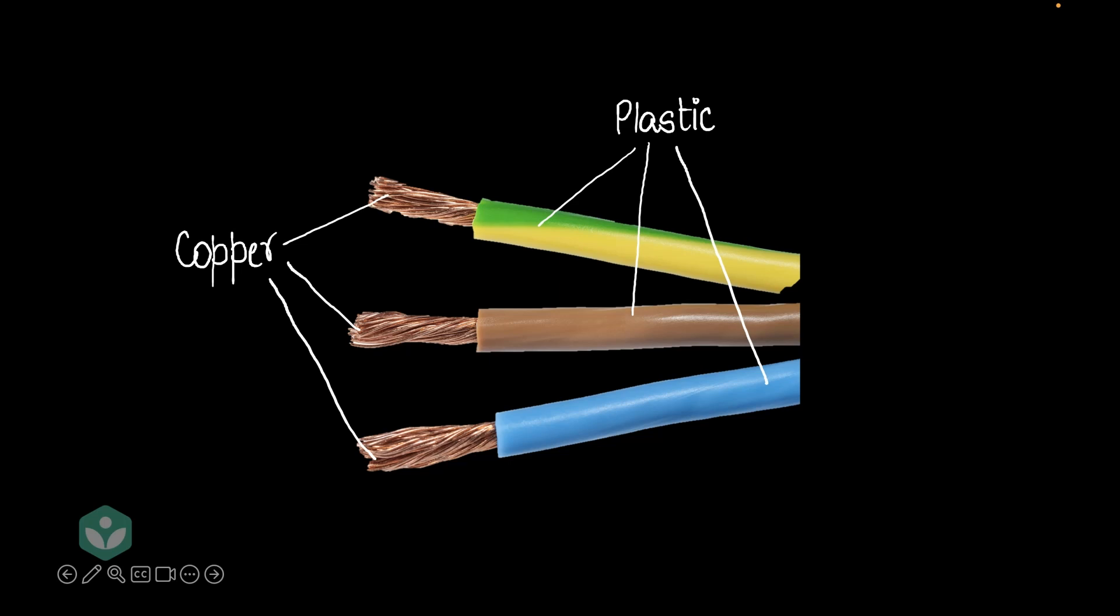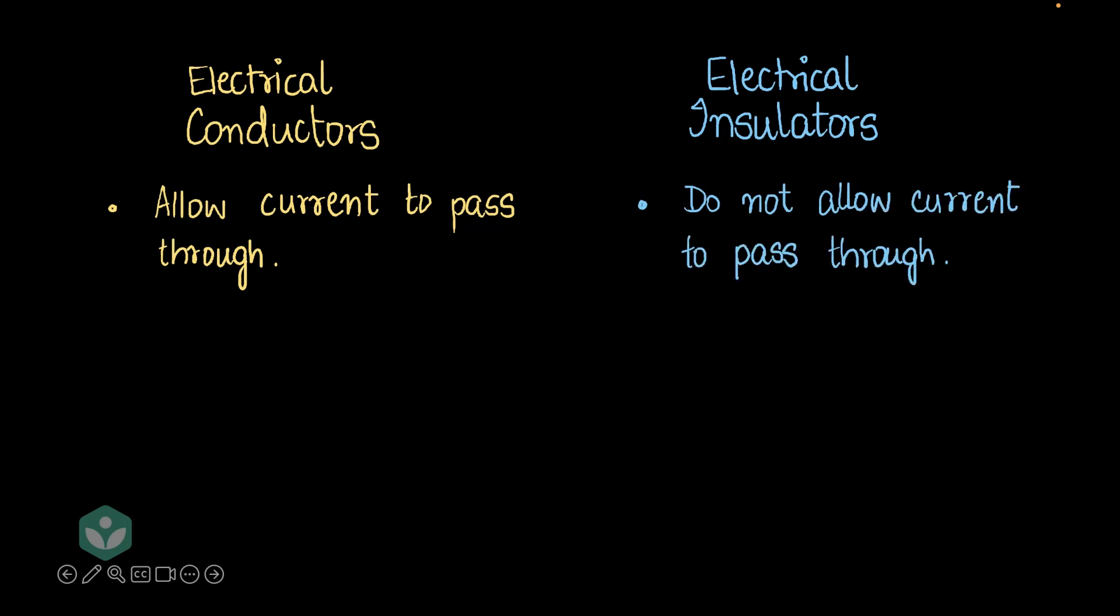Okay, to understand this, we've got to know about electrical conductors and insulators. Electrical conductors are materials that allow current to pass through, whereas electrical insulators are materials that do not allow electrical current to pass through them.